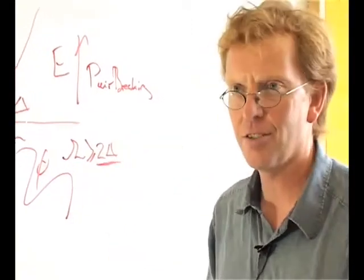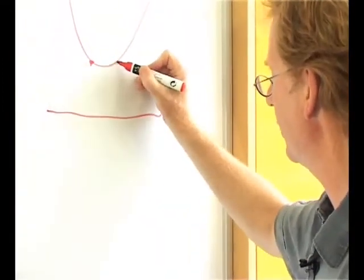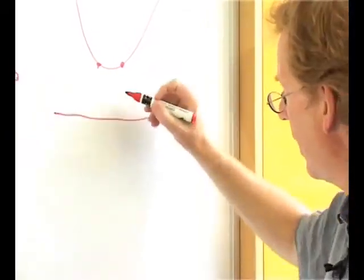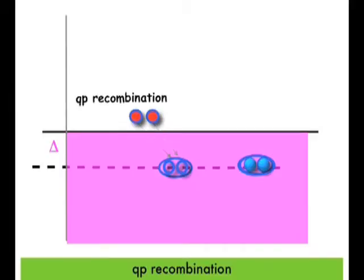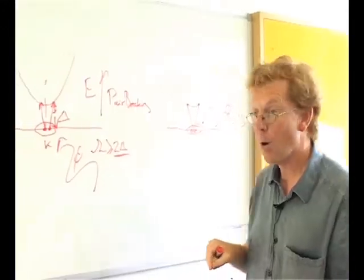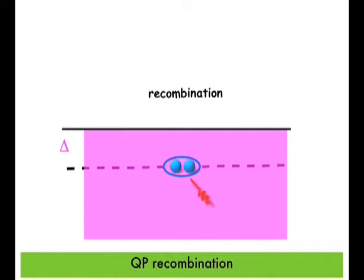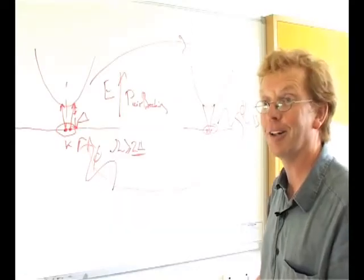Phonons capable of breaking Cooper pairs must have energies which are greater than or equal to twice the energy gap. Now, of course, the reverse process can also happen, where if we've got a superconductor with two excitations, these can recombine. When the quasiparticles recombine, they emit a two-delta phonon. The two-delta phonon can't easily get out of the thin film. It remains trapped, and it breaks another pair. Or, depending on the geometry of the superconducting film, it can be lost into the substrate.